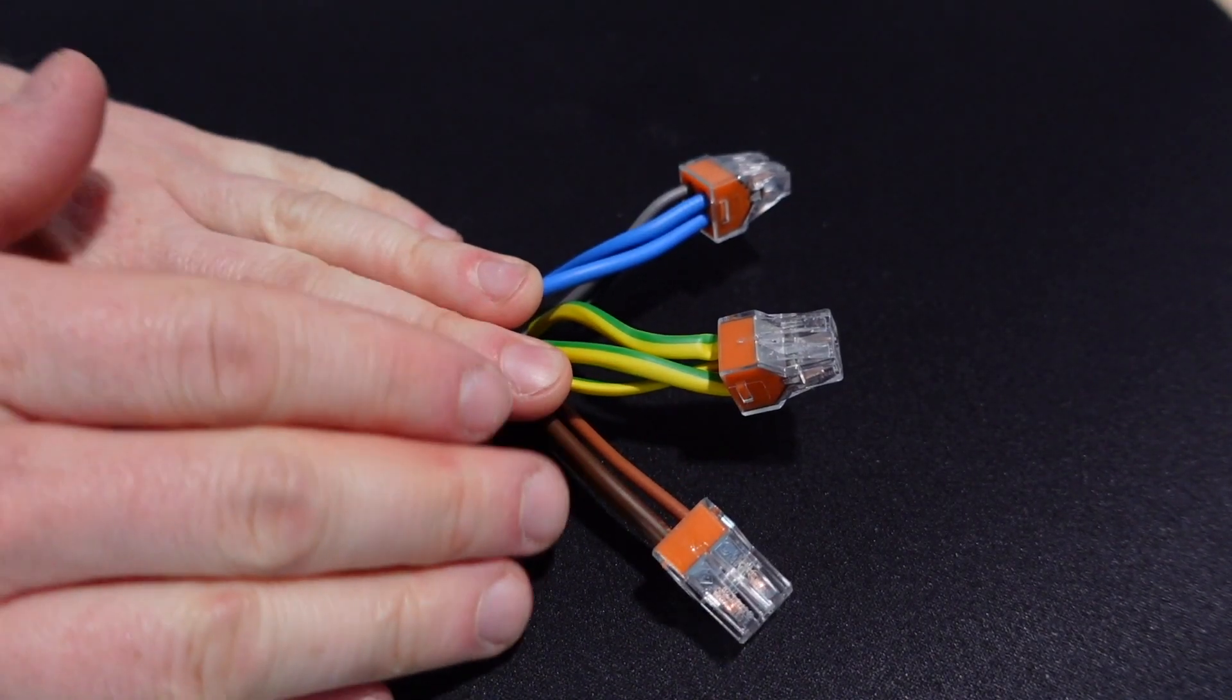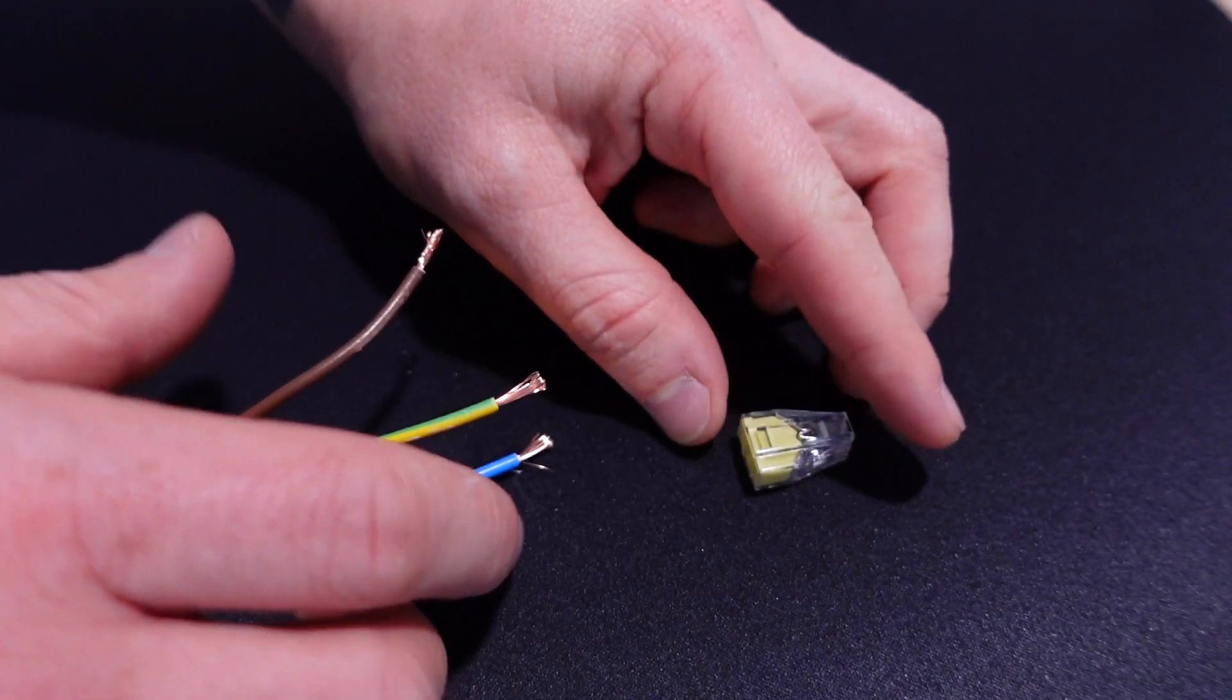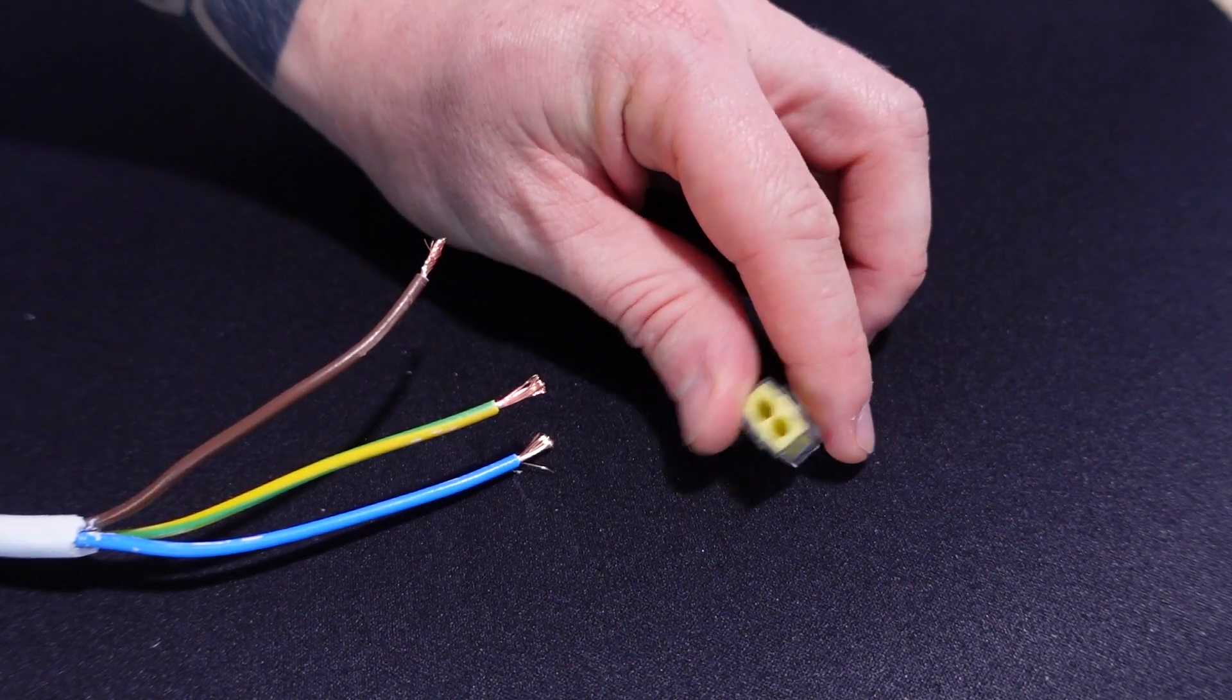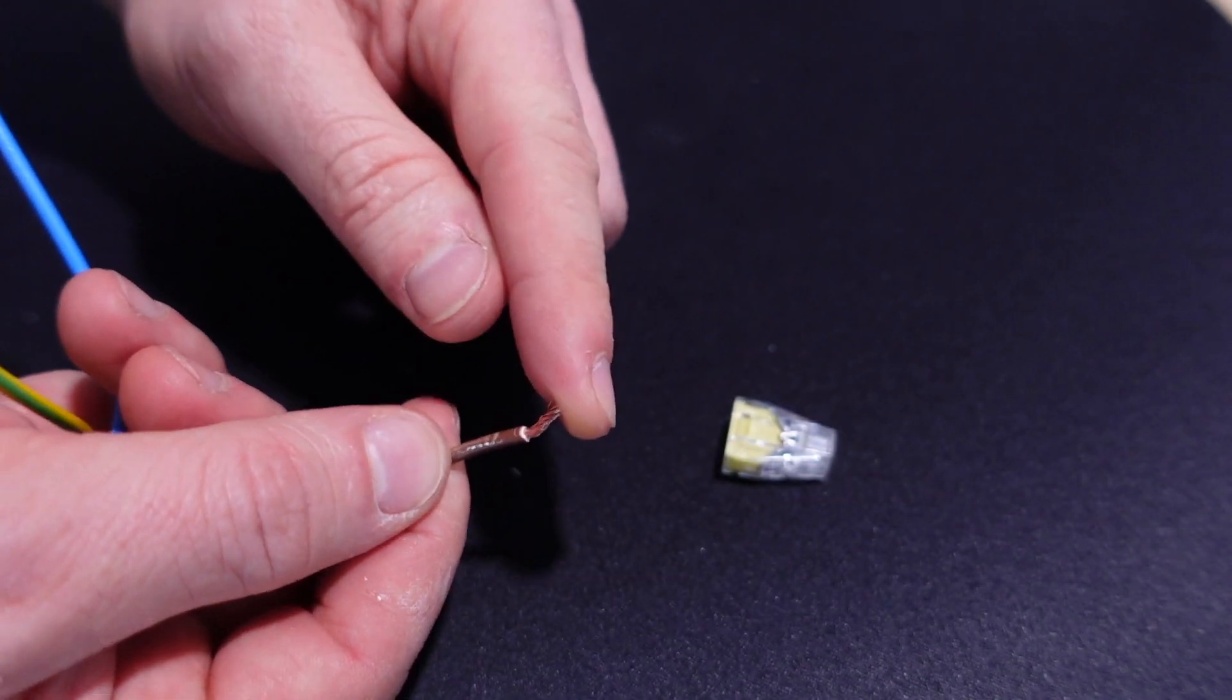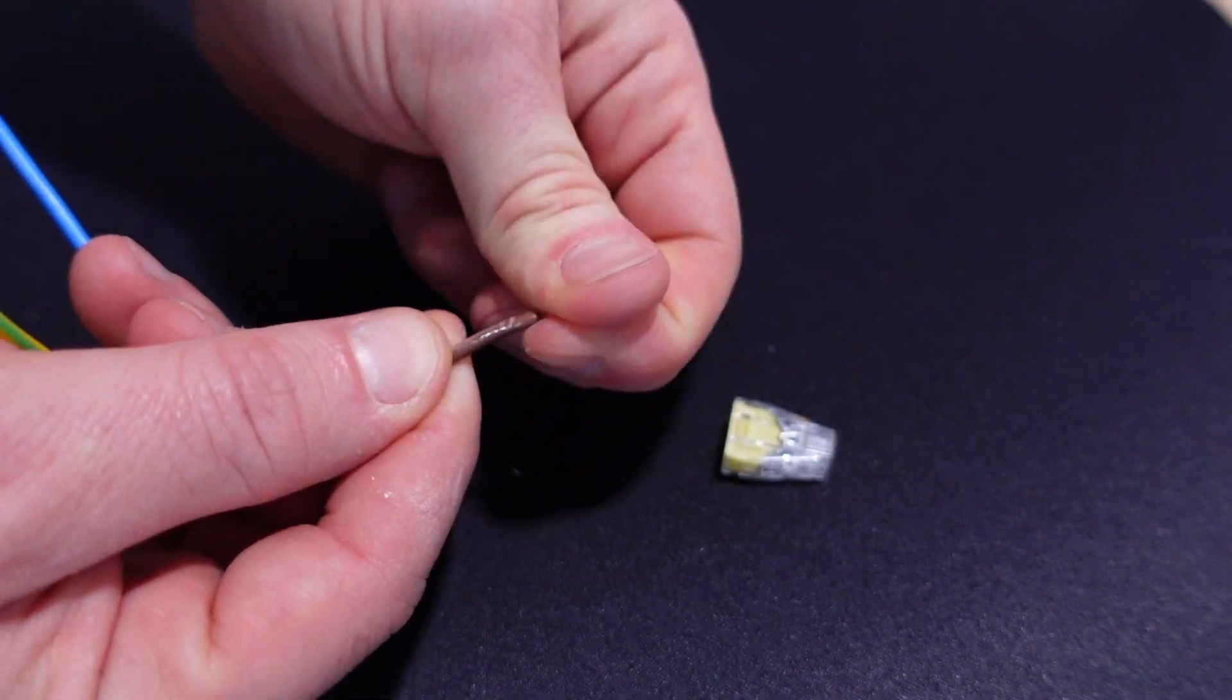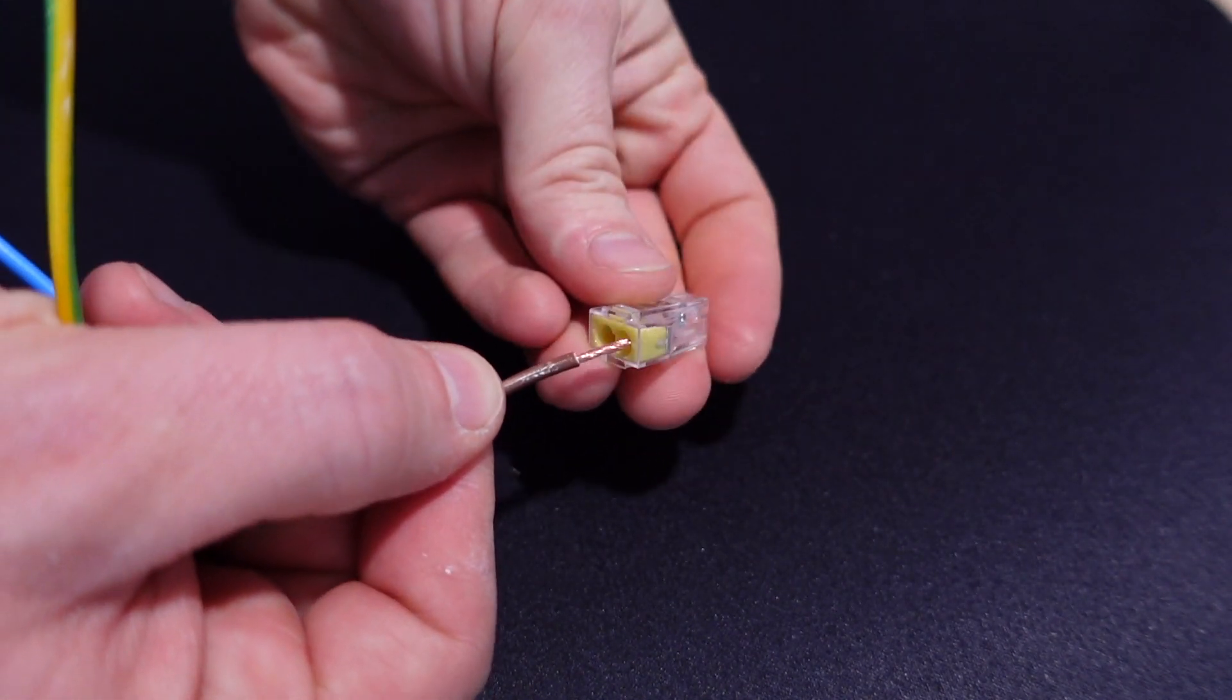So what cons do we have with the push fit connector? Well, there is really only one or two. Where larger gauge wire is very easy to push against the resistance of the connector, a stranded wire or a low gauge wire that's very easy to bend actually is very, very difficult to push into the connector.